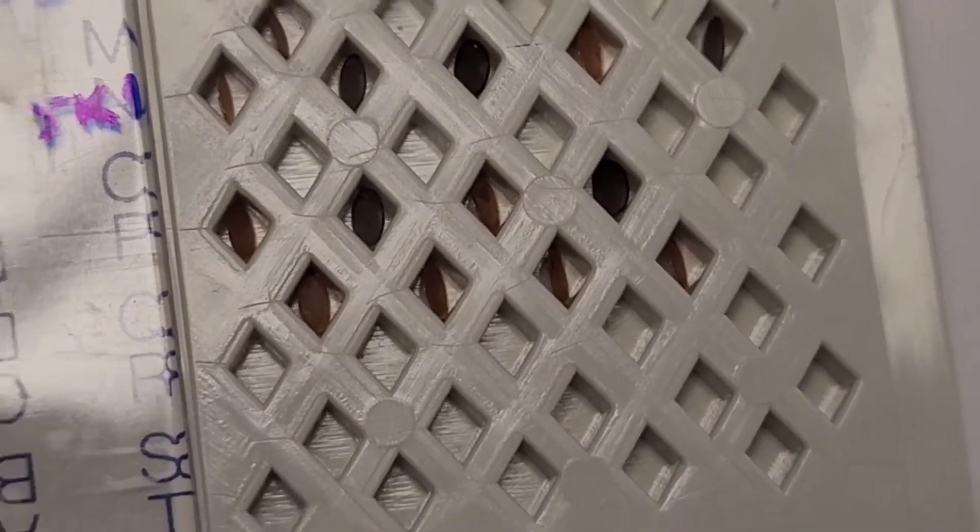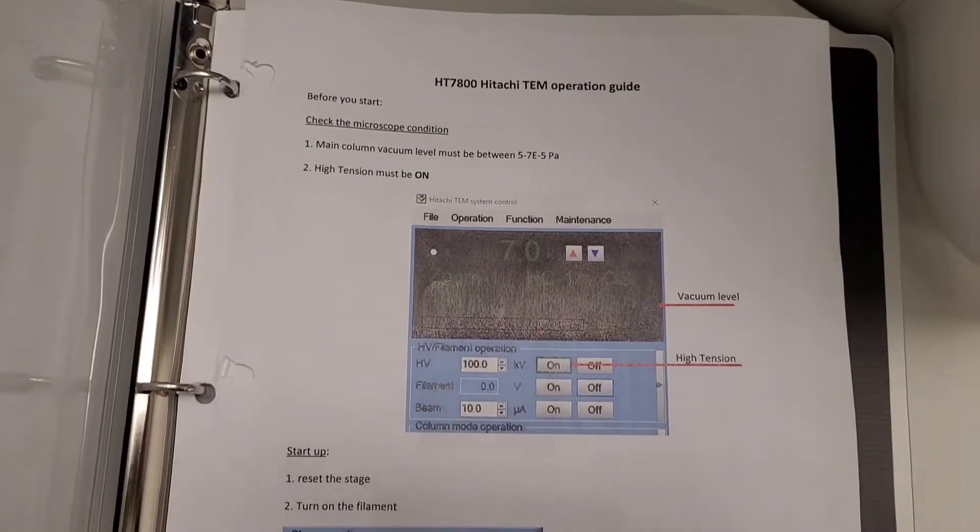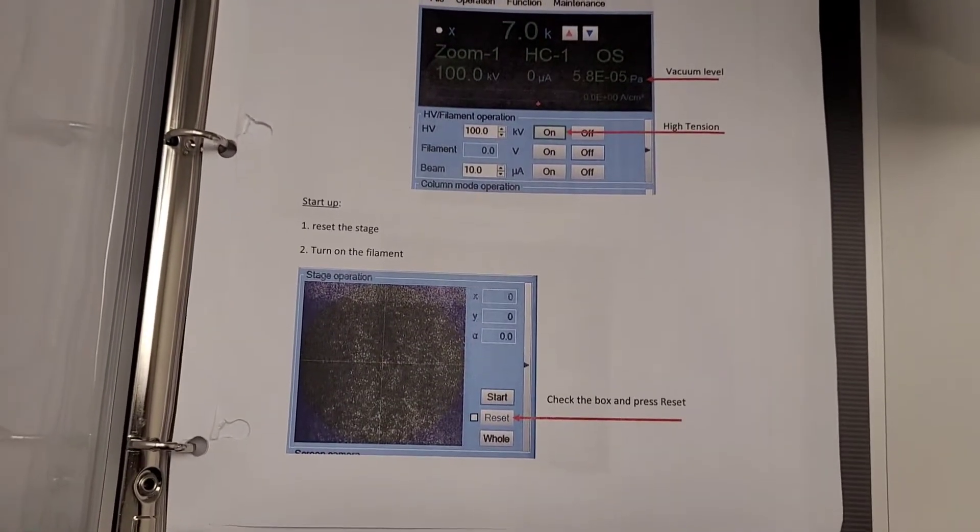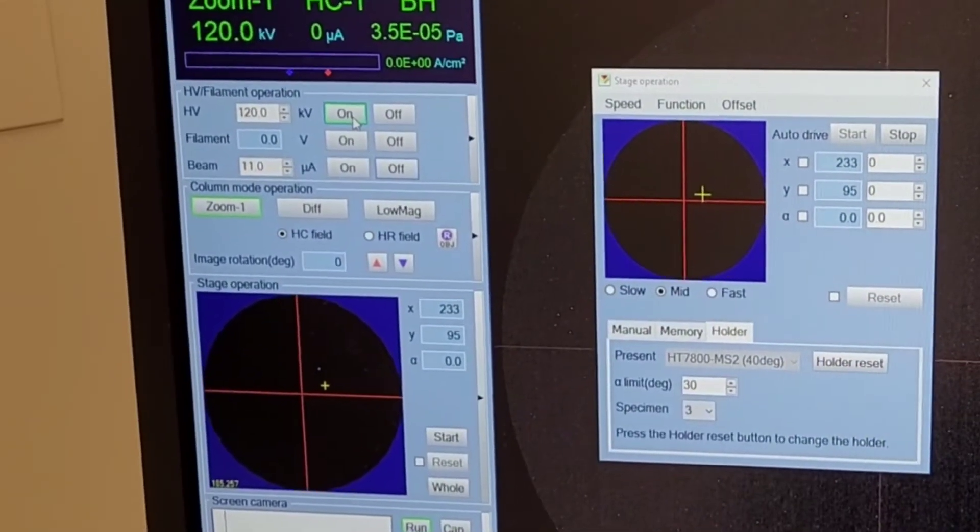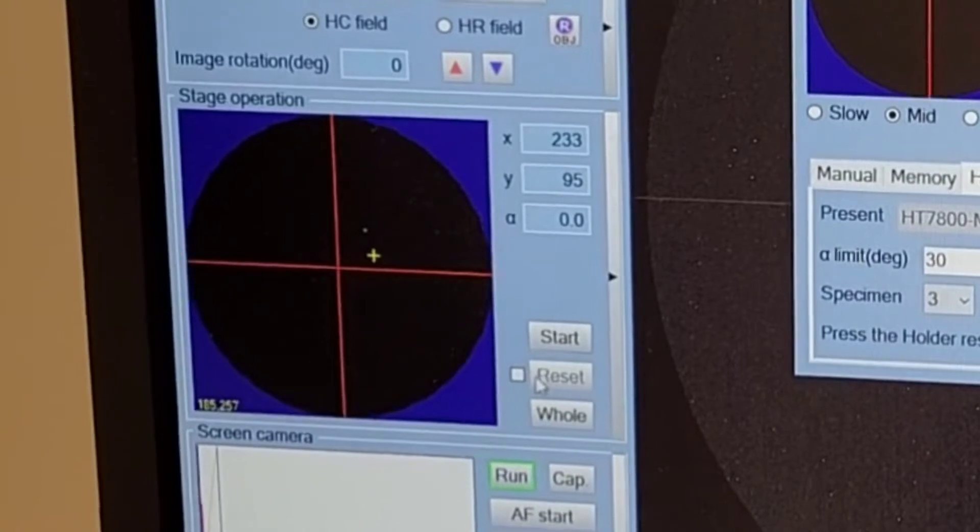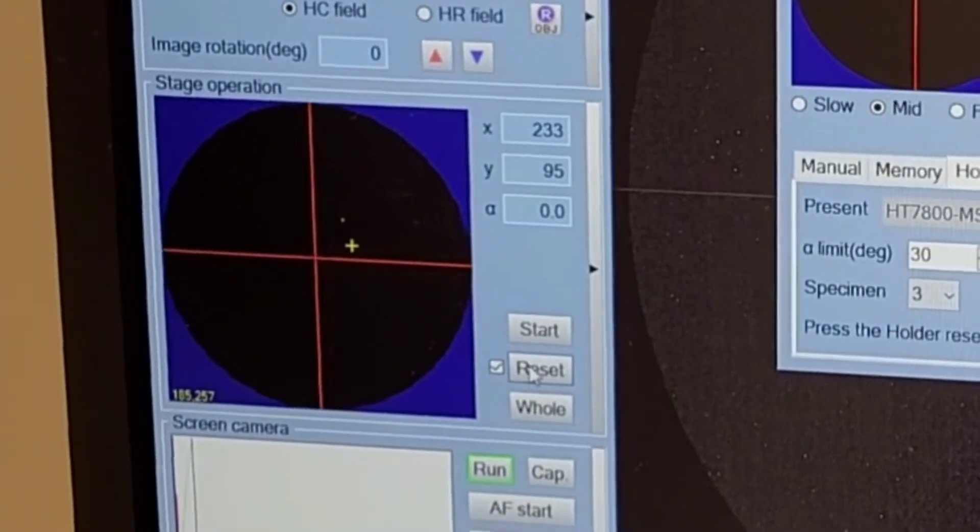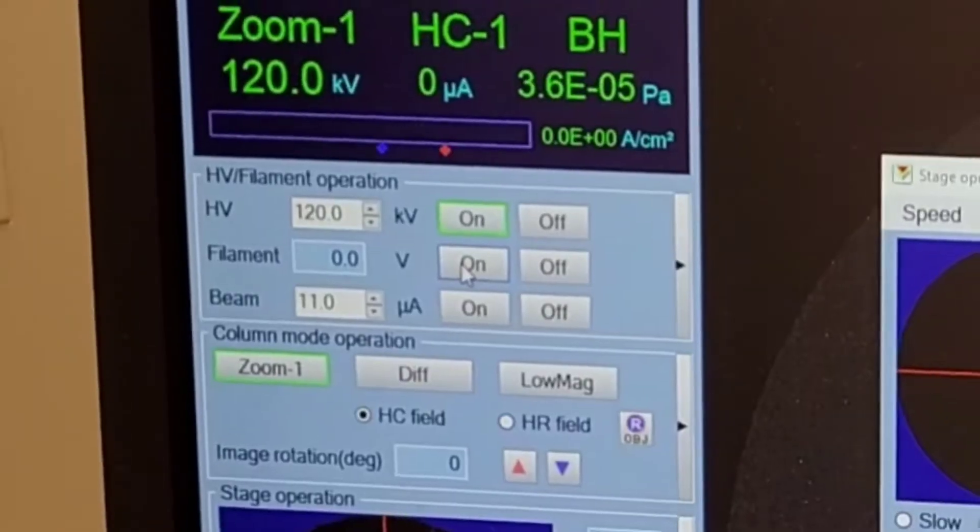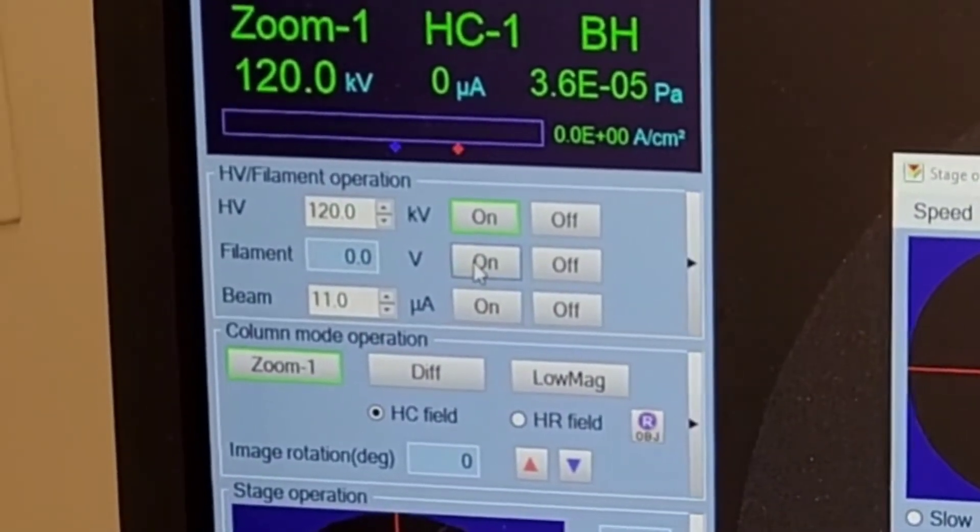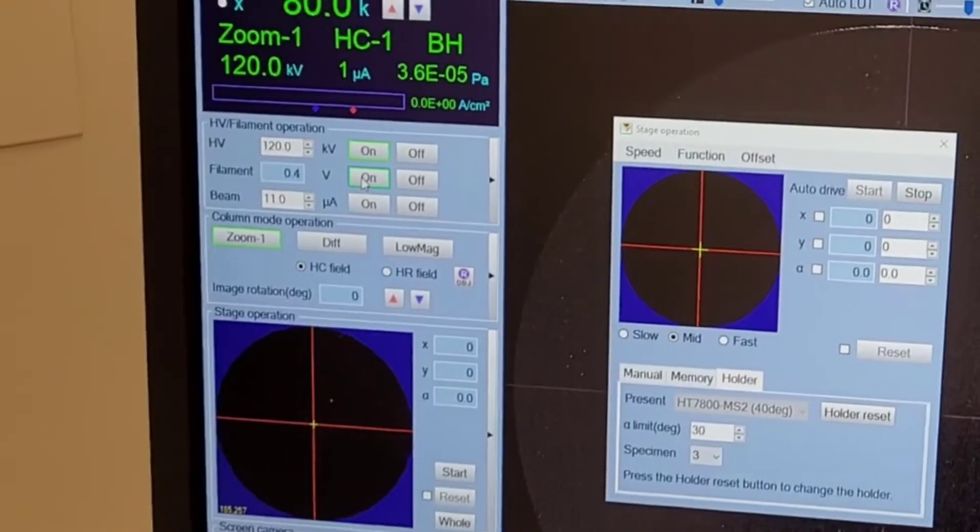This one is better than the one I've shown before because you can load up to three samples at a time. The first thing is to reset the stage and then you want to turn on the filament and then you want to give this some time, maybe five minutes after turning it on.